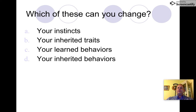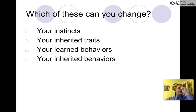Which of these can you change? A) your instincts, B) your inherited traits, C) your learned behaviors, or D) your inherited behaviors? If you answered C, you're right — you can change your learned behaviors. For example, if you learned to brush your teeth back and forth, you can learn to brush from the gums up or down instead.